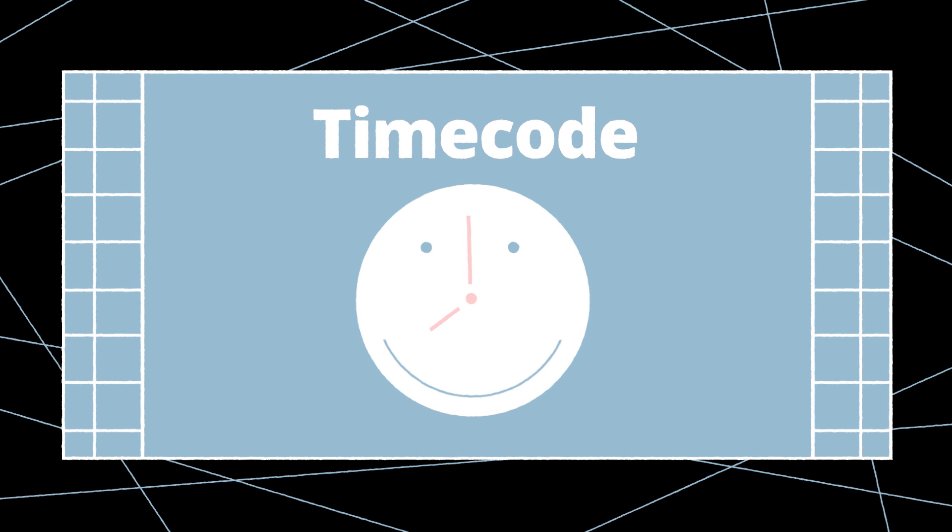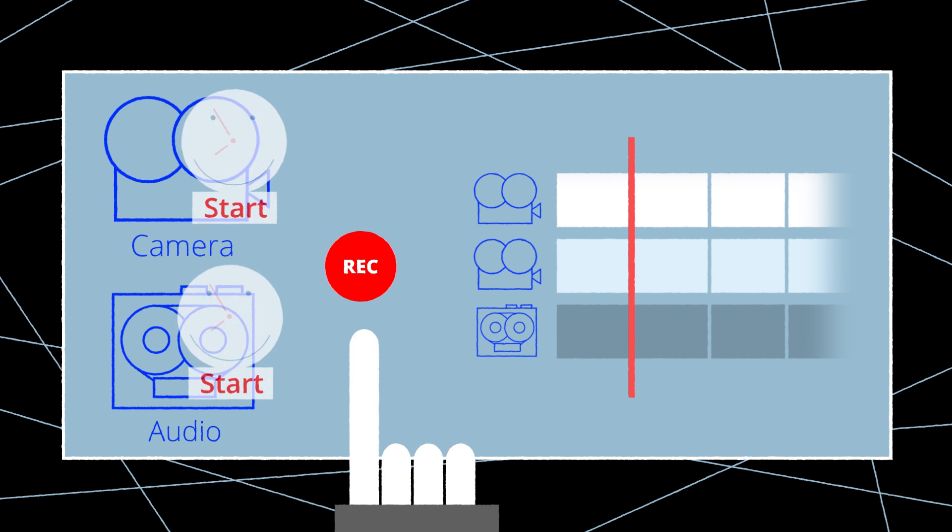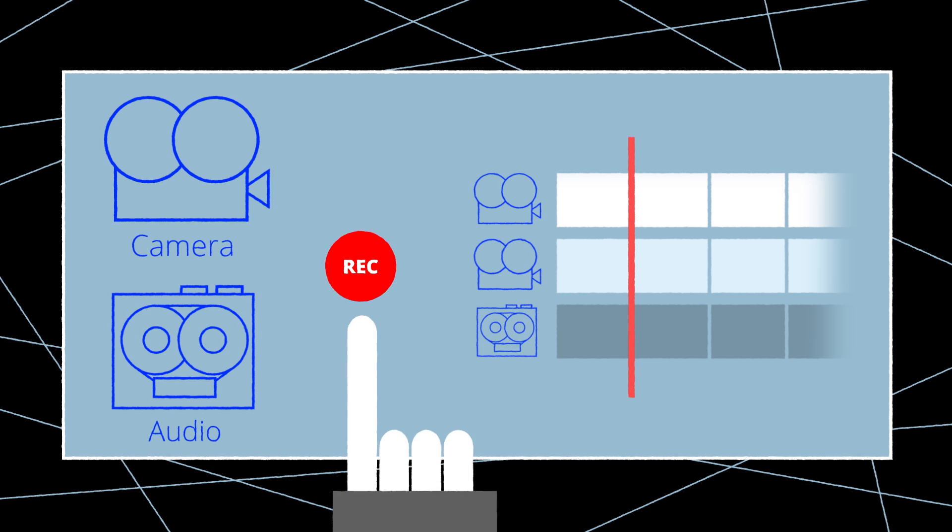At this point, one might still ask, why doesn't the constant timecode prevent this problem? As we are using modern, file-based production audio and video recorders, the timecode is simply a documented stamp referencing the beginning and the end of the recording.